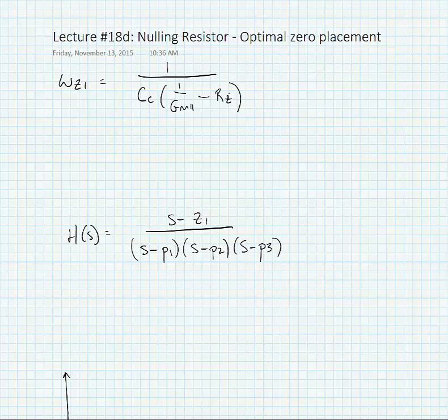In the last video we noted that we can now, with the addition of a nulling resistor, change the location of our zero by just changing the size of the nulling resistor.